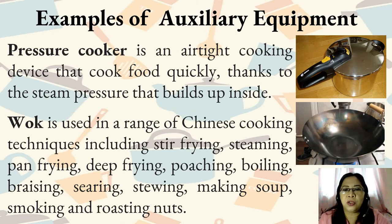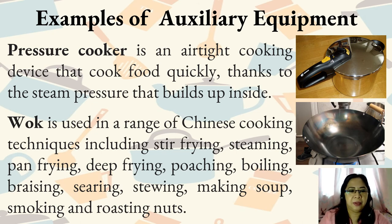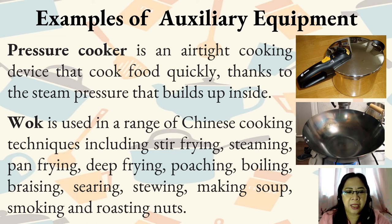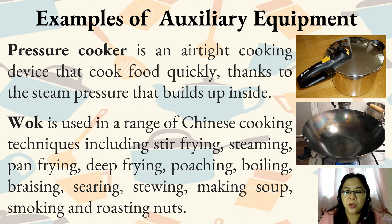Examples of auxiliary equipment: Pressure cooker is an airtight cooking device that cooks food quickly thanks to the steam pressure that builds up inside. The wok is used in a range of Chinese cooking techniques including stir frying, steaming, pan frying, deep frying, poaching, boiling, braising, searing, stewing, making soup, smoking, and roasting nuts.